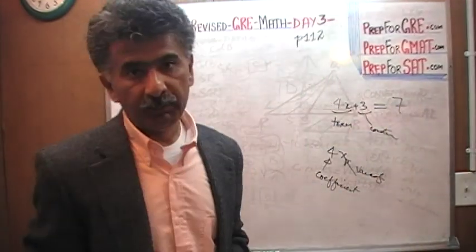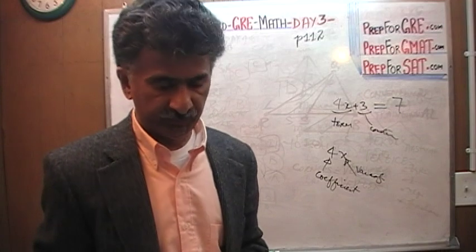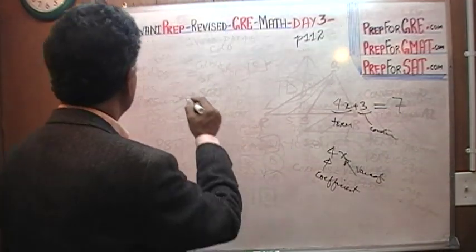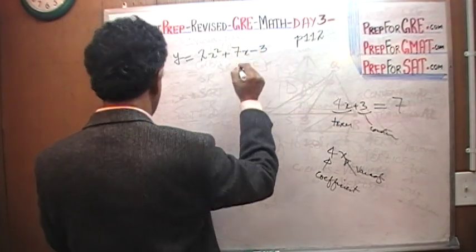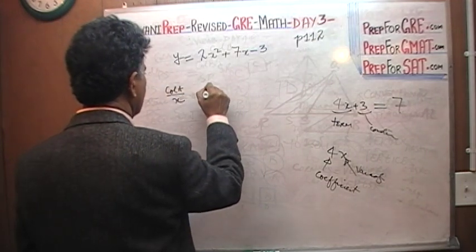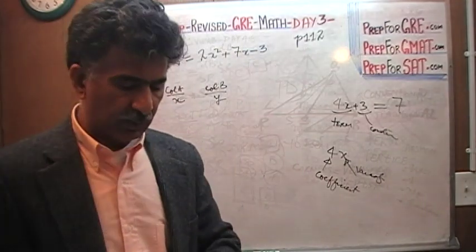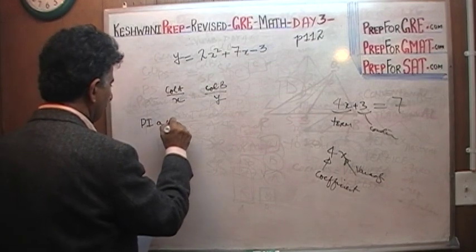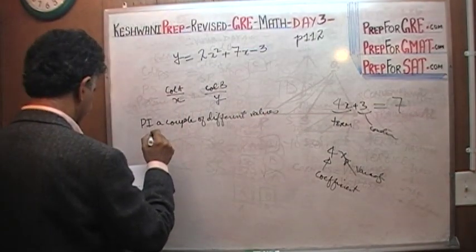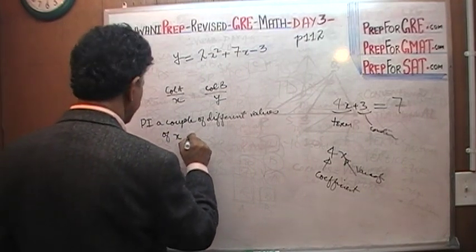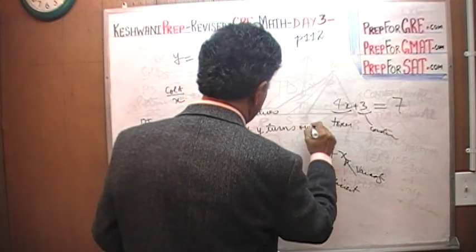But if I put equals 7, now it becomes an equation. So I misspoke a little while ago when I said that we have an expression here. We do not have an expression, but we have at hand an equation which looks something like this: y = 2x² + 7x - 3. And we are asked to compare x versus y. Very simple, very straightforward problem. The thing to do here is to plug in a couple of different values of x and see what y turns out to be.